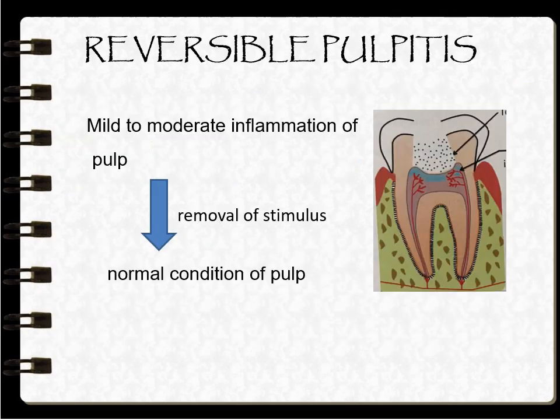Pulpitis is of two types: reversible pulpitis and irreversible pulpitis. In reversible pulpitis, when there is mild to moderate inflammation of the pulp, on removal of the stimulus — which here means dental caries — removing the decayed part and restoring the tooth will lead to normal conditioning of the pulp.